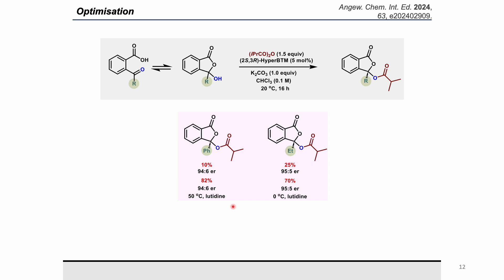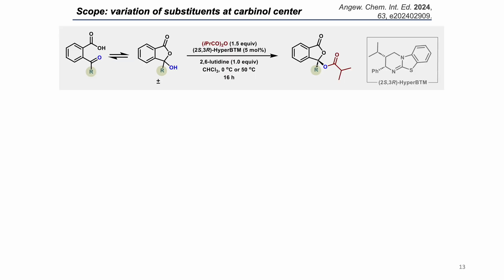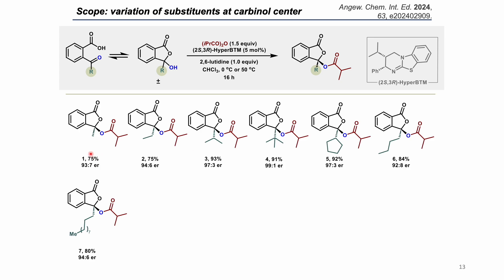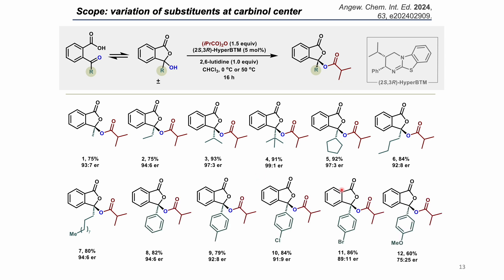Further optimization showed that for aryl substrates, 50°C and lutidine as base was optimal, giving 82% yield, while for alkyl substituents, 0°C and lutidine were chosen. The generality of the reaction was then explored by varying substituents at that carbon: increasing linear chain length, branched substituents, and even a tert-butyl group — which generally does not work in resolution reactions — were well tolerated, giving excellent yield and selectivity. Both electron-donating and electron-withdrawing groups on the aryl ring were also well tolerated.